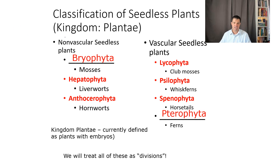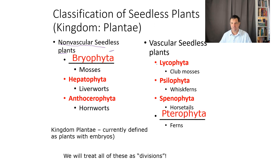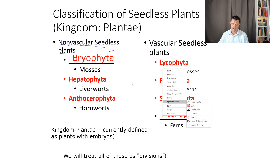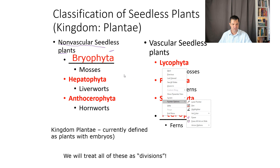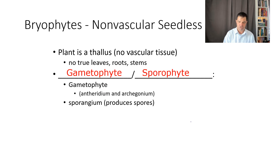We'll put all these in the same kingdom, which is Plantae. So domain Eukarya, kingdom Plantae. We have our nonvascular seedless plants first, which includes Bryophyta, Hepatophyta, and Anthocerophyta — which are mosses, liverworts, and hornworts. And then we have our vascular plants, which are the Lycophyta, Zosterophyllophyta, Sphenophyta — which are horsetails — and then we'll talk about our Pterophyta, which are our ferns. So we'll go through each of these.